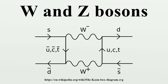Z boson. The Z boson is its own antiparticle. Thus, all of its flavor quantum numbers and charges are zero. The exchange of a Z boson between particles, called a neutral current interaction, therefore leaves the interacting particles unaffected, except for a transfer of momentum. Z boson interactions involving neutrinos have distinctive signatures. They provide the only known mechanism for elastic scattering of neutrinos in matter. Neutrinos are almost as likely to scatter elastically as inelastically.